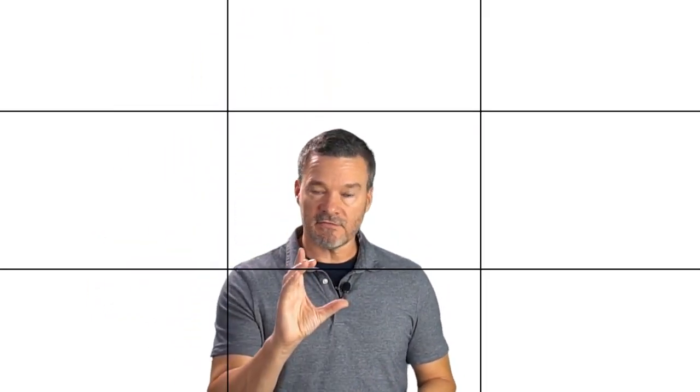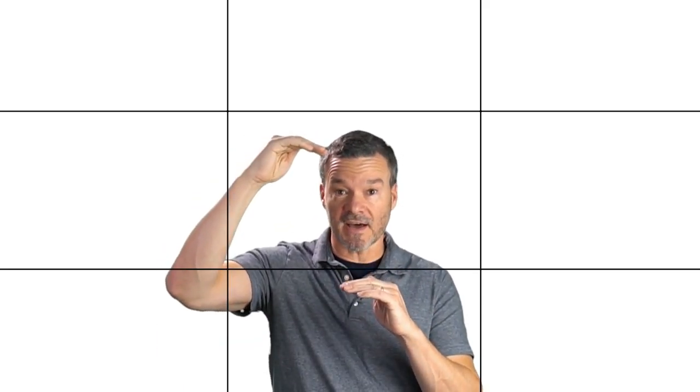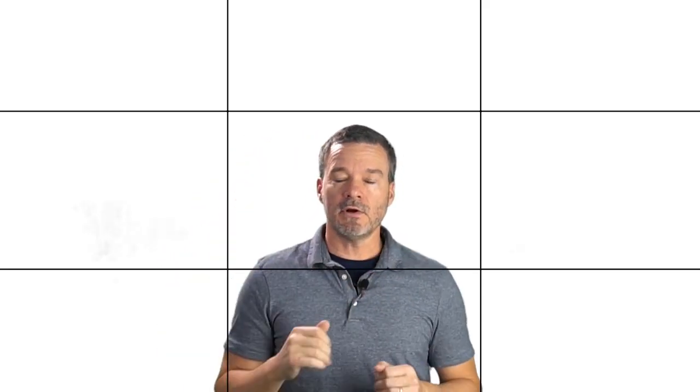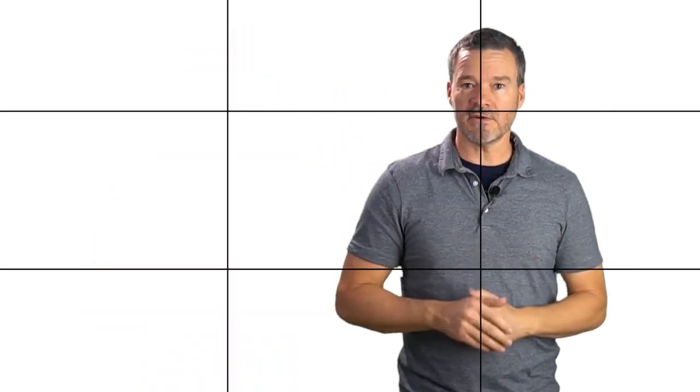Now let's talk about where the face goes, because this is the most important part. Do not place your face in the middle of the photo. You don't want a shot where the face is in the middle and then the second half of the photo is sky. You want your face to be on the top one-third line, preferably where two of the third lines intersect. This can be on the left or it can be on the right.